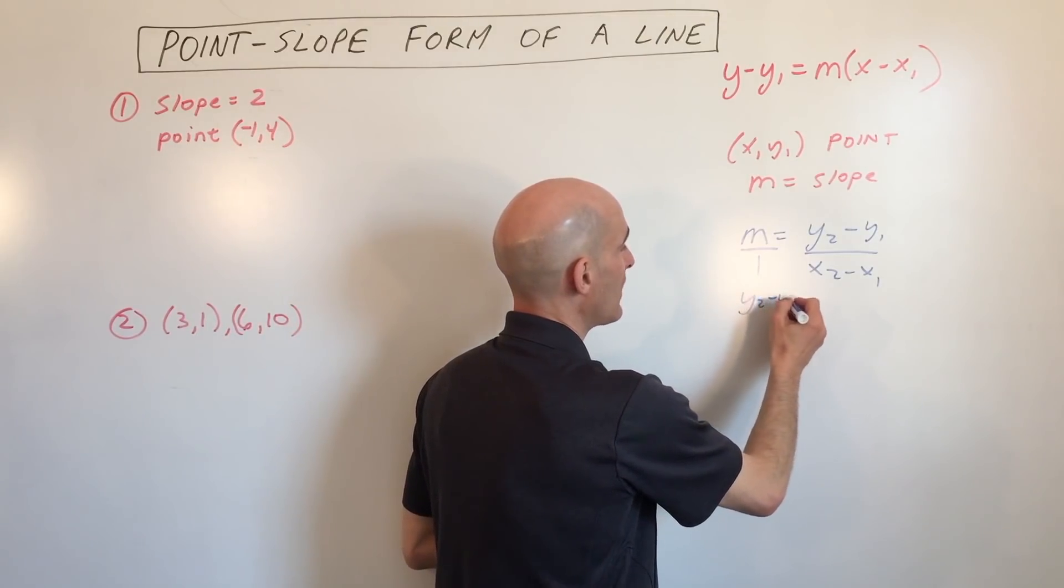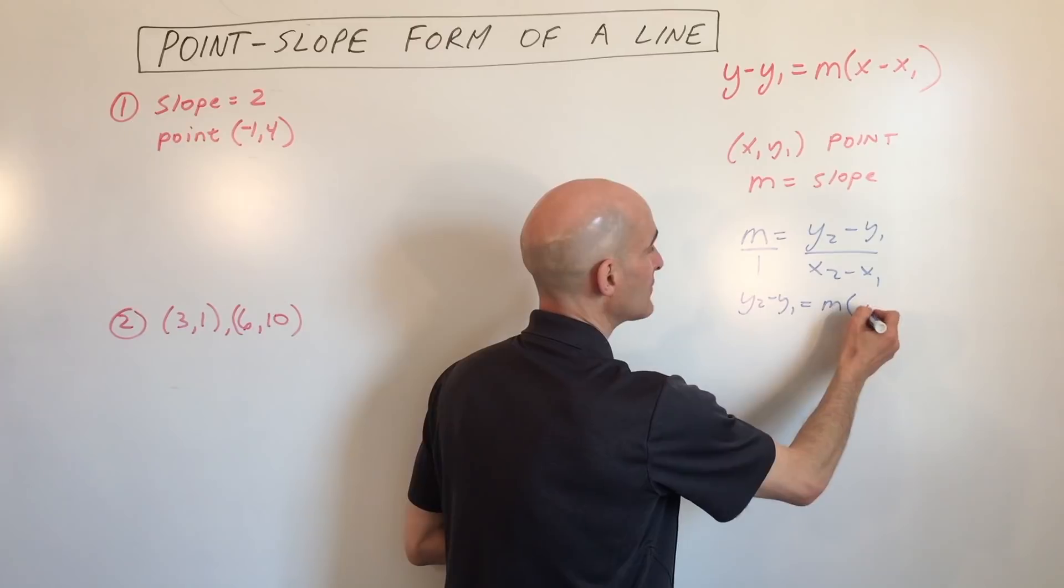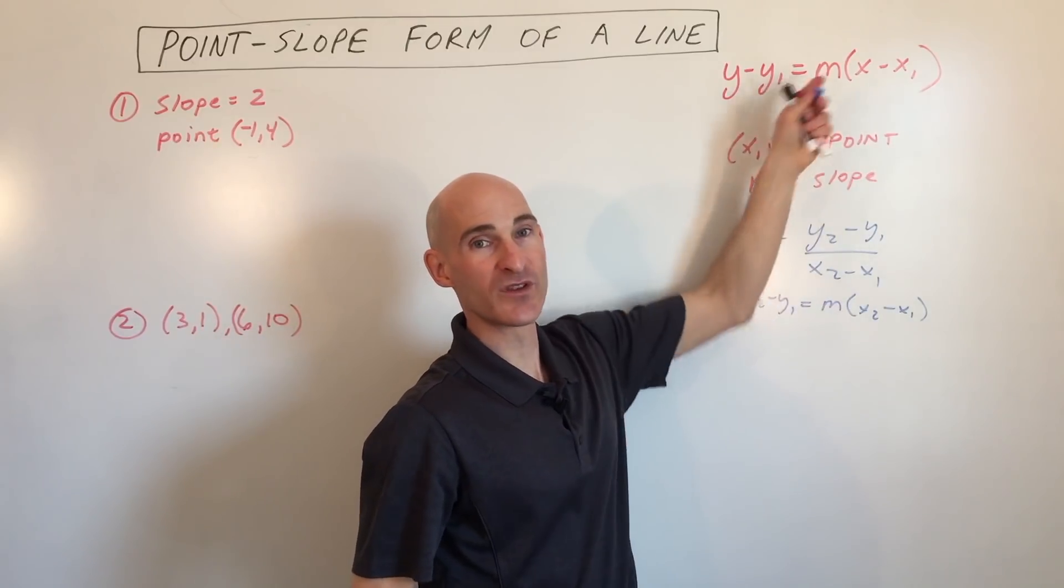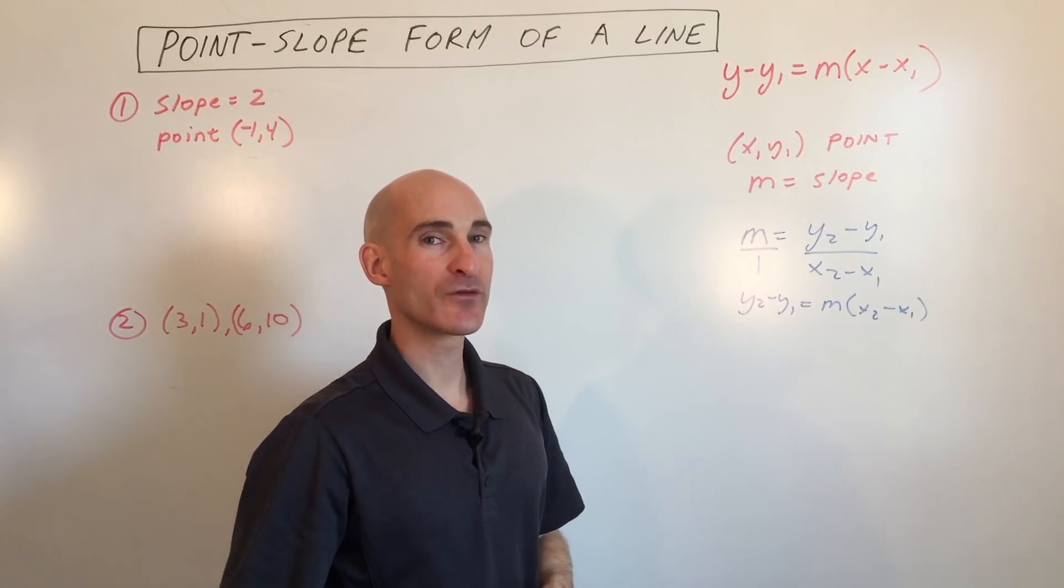We get y2 minus y1 equals m times x2 minus x1, and you can see the formulas are the same. So it comes from that formula for slope.